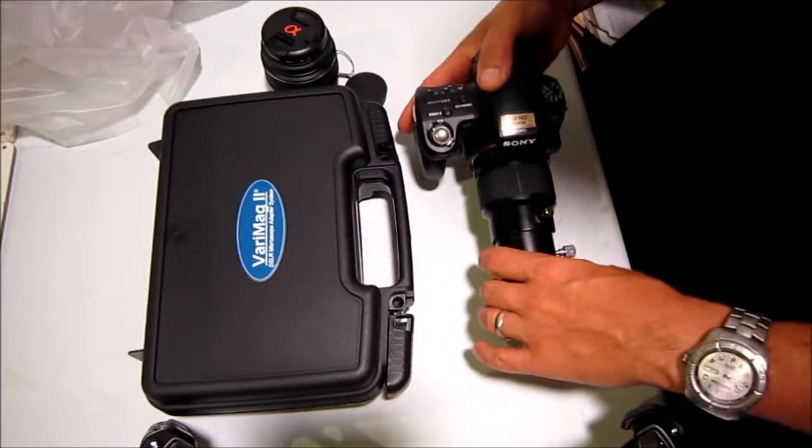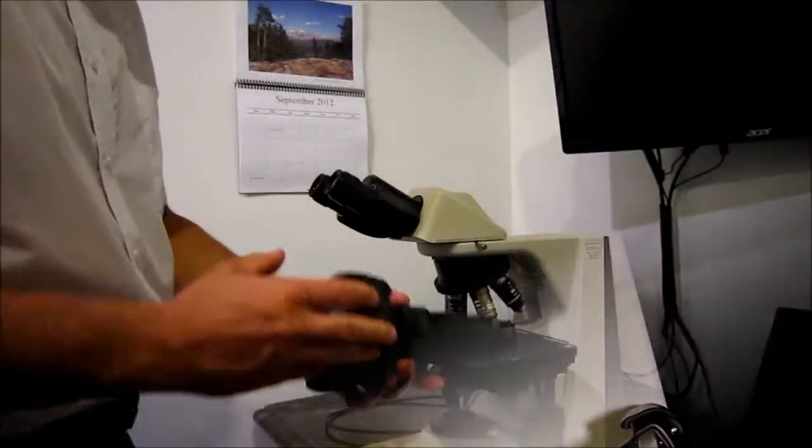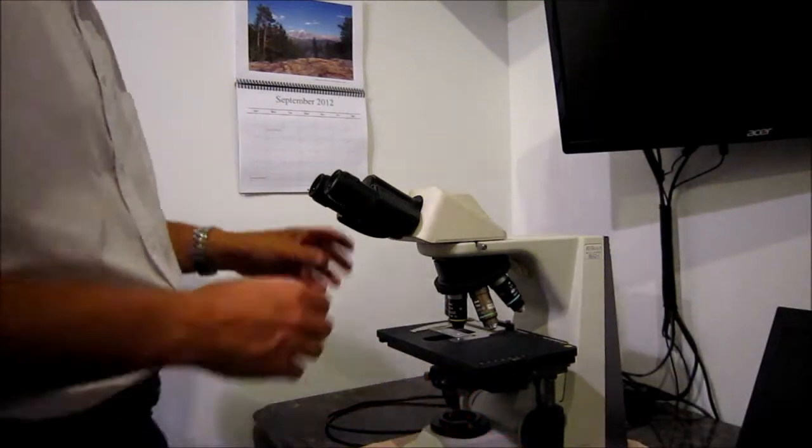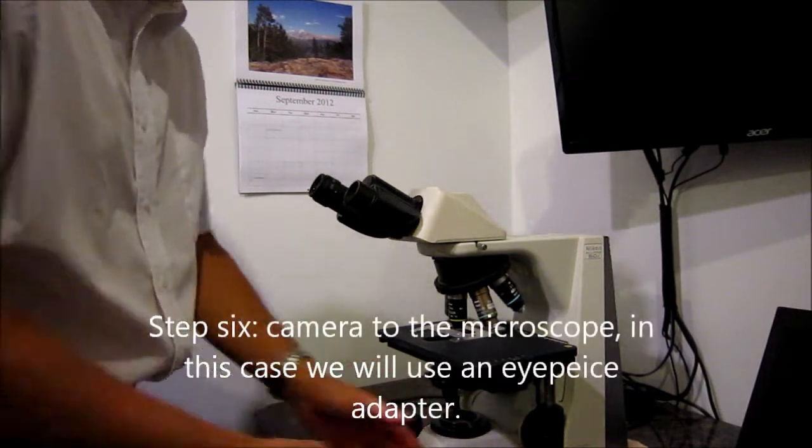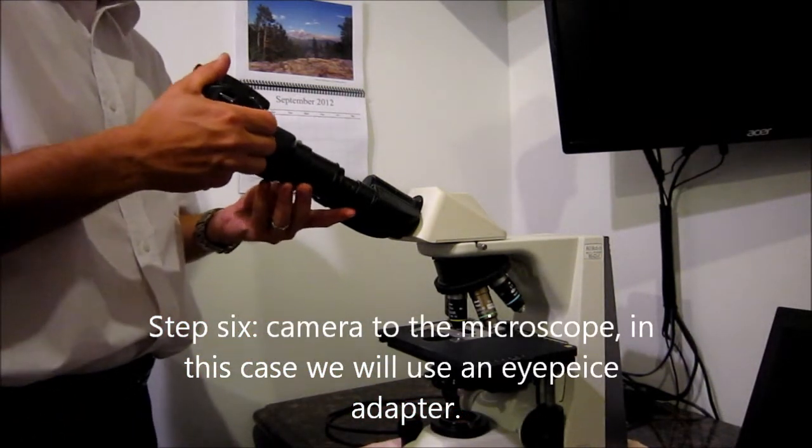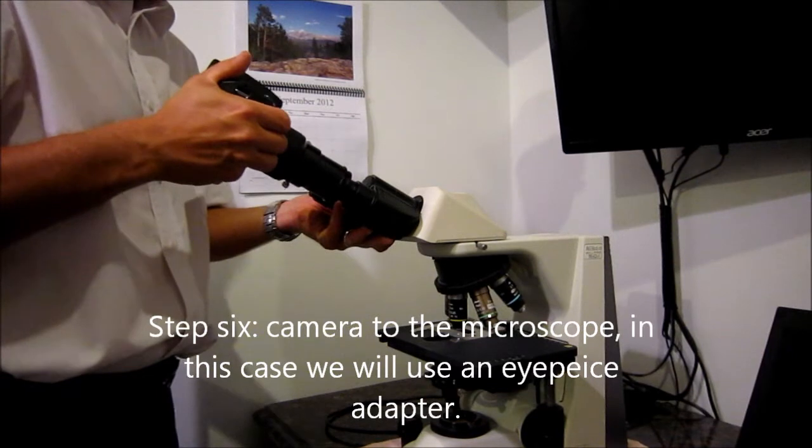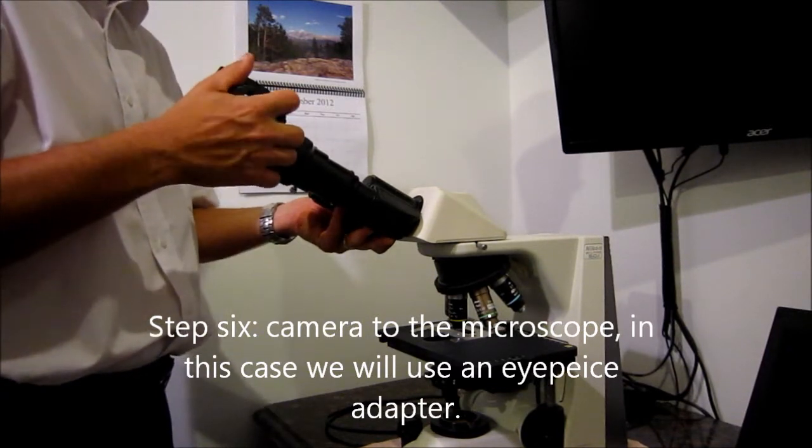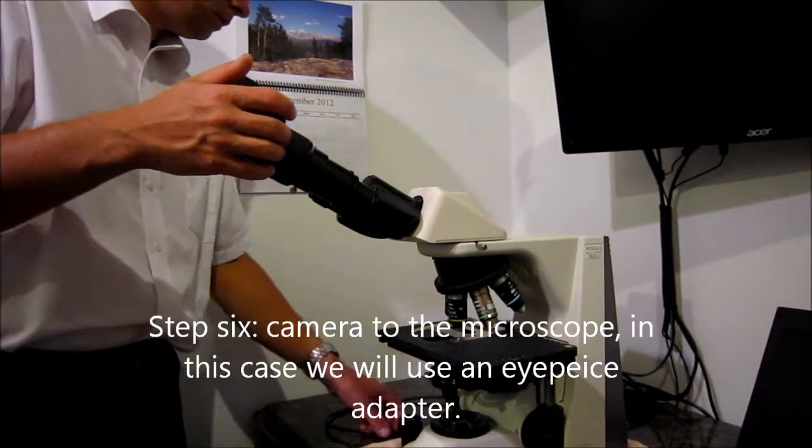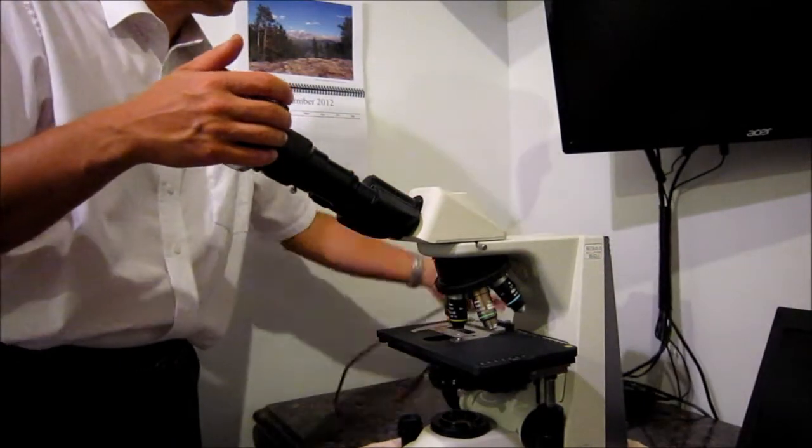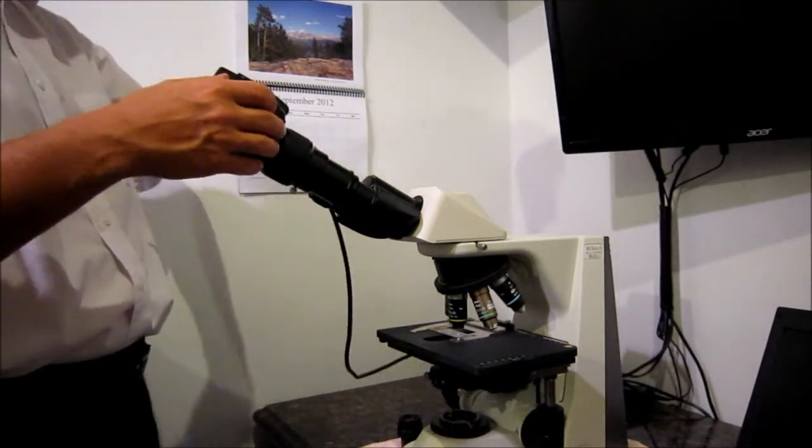Then we're going to hook an HDMI cable up to it, go right into the TV, and the TV will also come down to the laptop and hook into the laptop, and then we're going to be set basically to take pictures and view. So pull out the eyepiece and stick the camera adapter right in, and then it's just a matter of basically hooking up the HDMI cable to the monitor and to the camera so that they communicate.